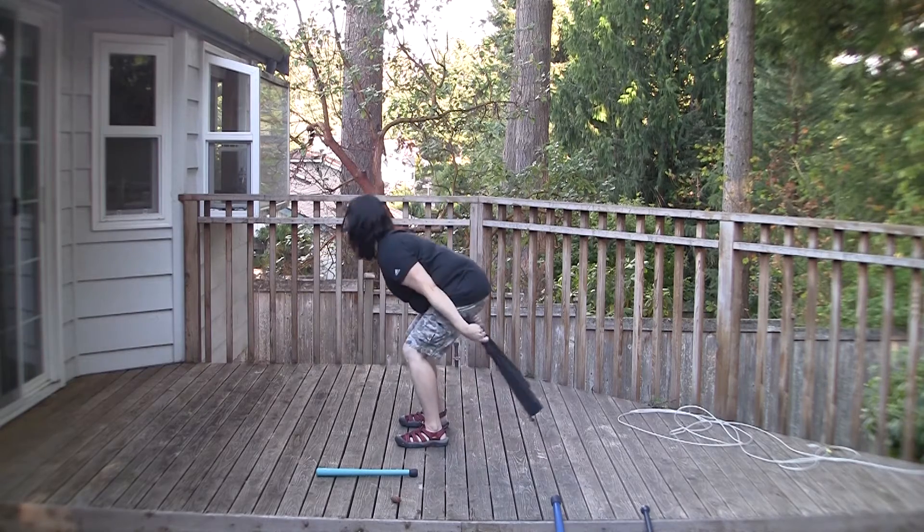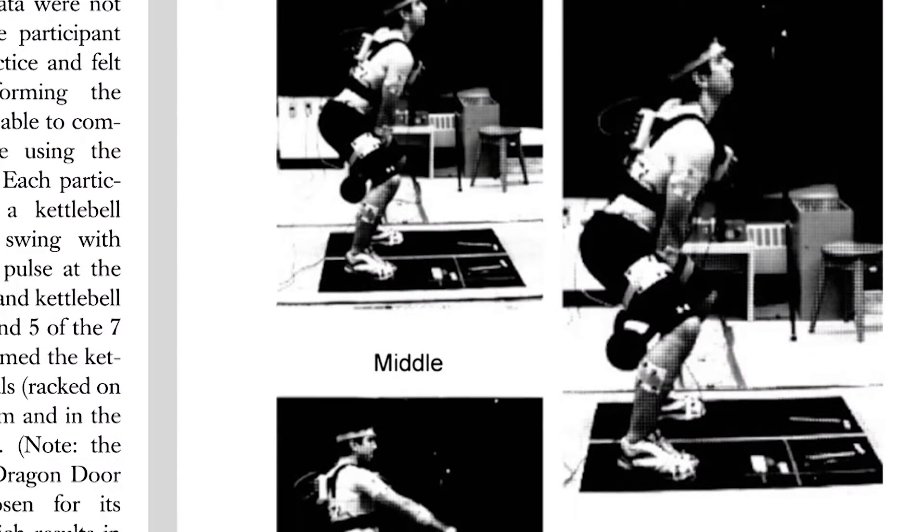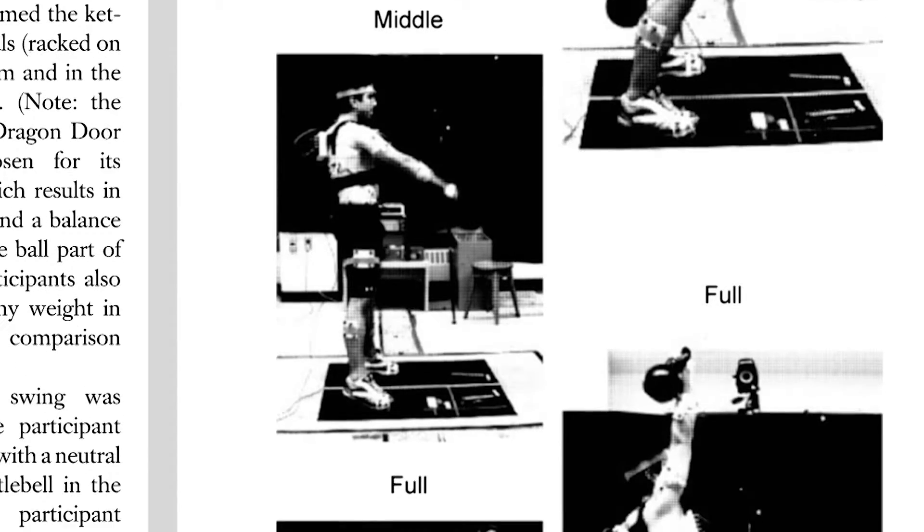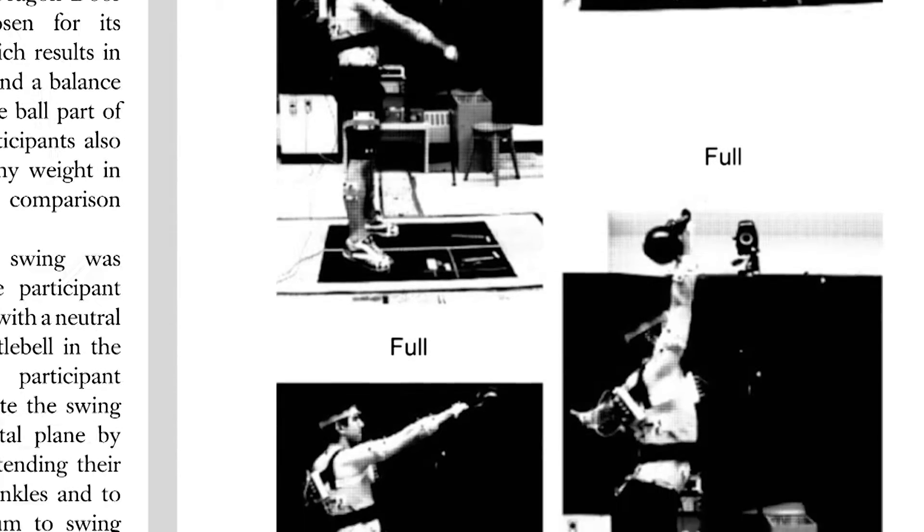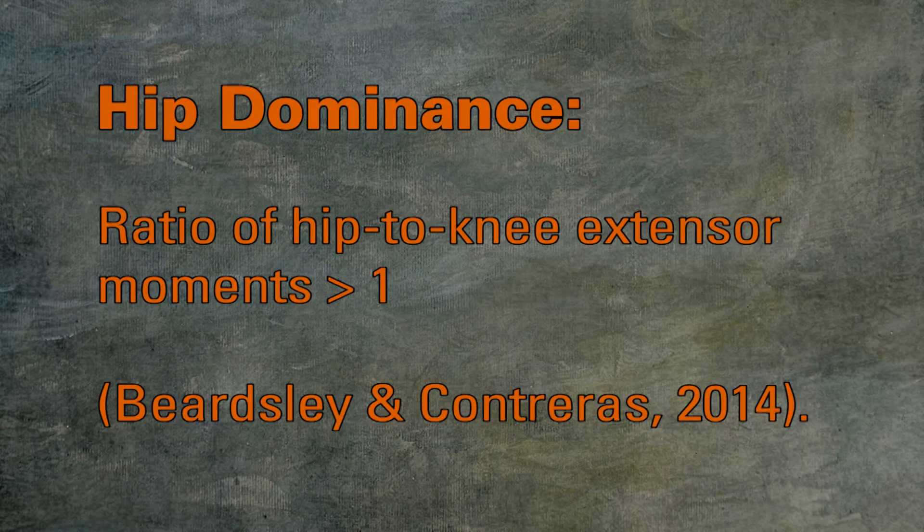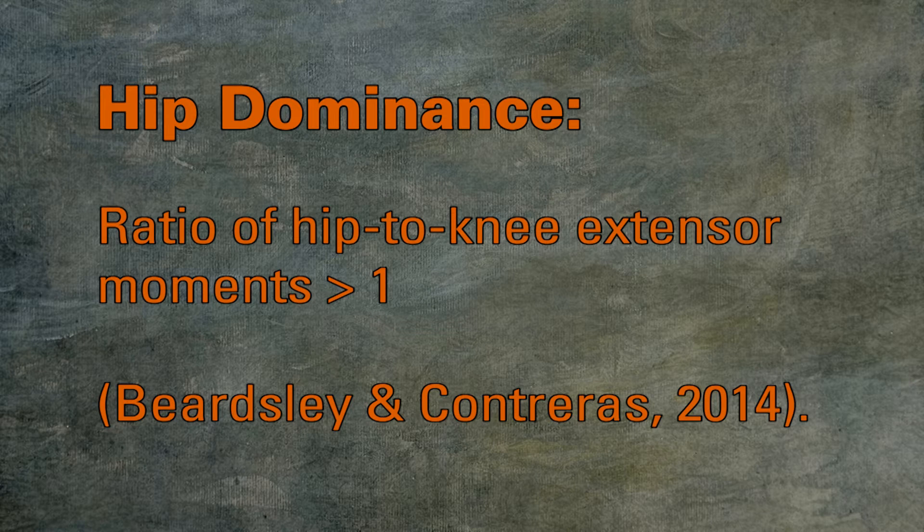This hip snap is very similar to the mechanics of the hard-style kettlebell basic swing, with a hip hinge squat movement pattern, characterized by rapid muscle activation relaxation cycles of the hip flexors and extensors. Both the kettlebell basic swing and the clubbell rocket drill and front swing are hip-dominant exercises.